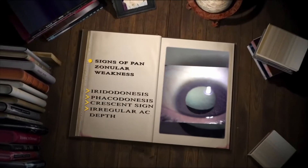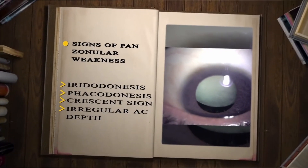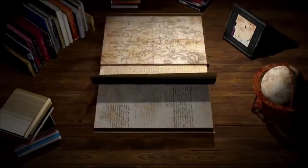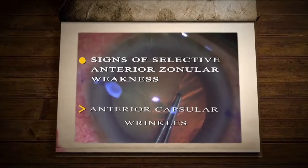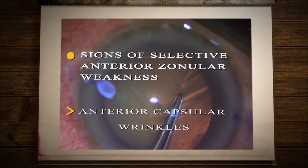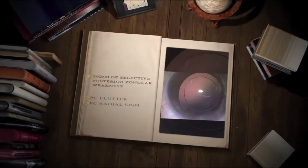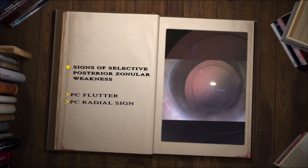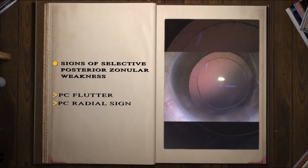The signs of pan-zonular weakness are well described in literature. The present video aims to demonstrate and discuss the signs of selective anterior zonular weakness, namely the capsular wrinkles, and selective posterior zonular weakness, namely the capsular flutter and the PC radial sign, and their management.